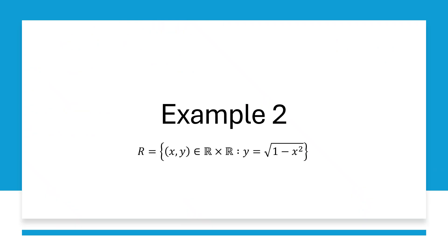Here is a second example. It is again a relation defined on the real numbers, and it says x is related to y if they satisfy this equation — if we can write y as the square root of one minus x squared. We are going to start with the exact same idea: we pick an element from the domain, some A, we assume it is related by R to both B as well as C, and we are going to try and show that this will always result in B being equal to C — meaning we will never be able to find two different y values such that A is related to both of them.